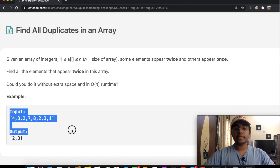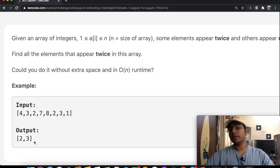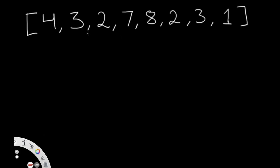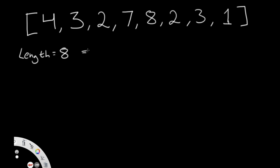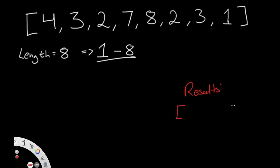Let's take a look at the input we're given and the output, which is 2 and 3. We have the list: 4, 3, 2, 7, 8, 2, 3, 1. Instead of explaining it upfront, I want to go step by step. The length of our array is 8, so it will only consist of numbers 1 through 8. We'll also make a results list that we'll return at the end.